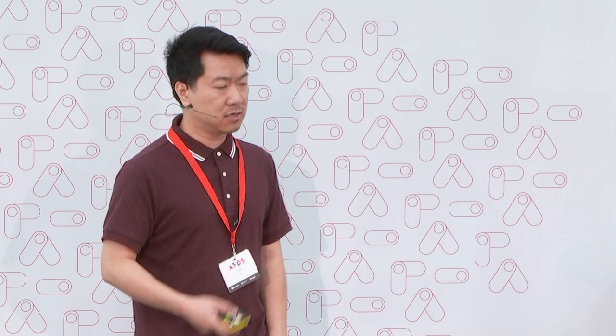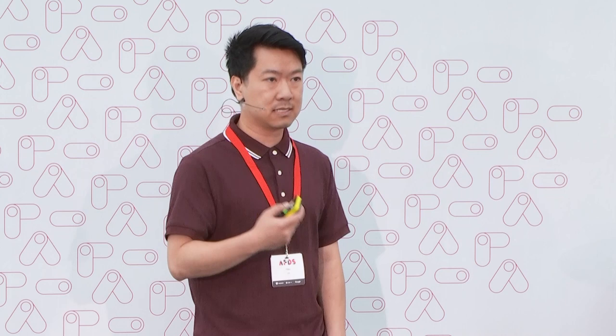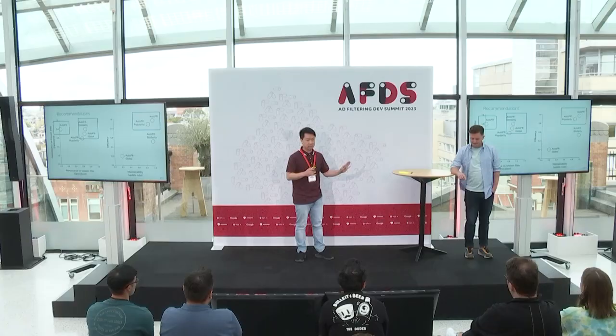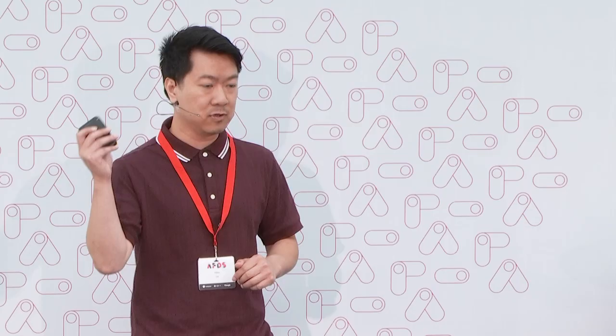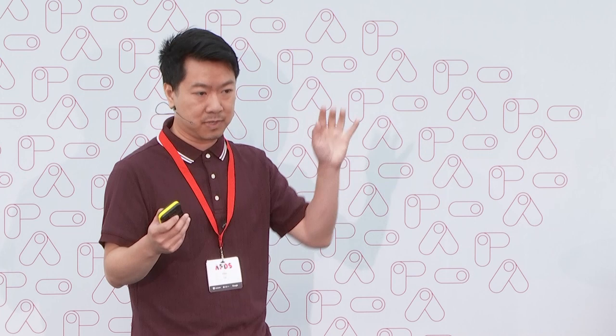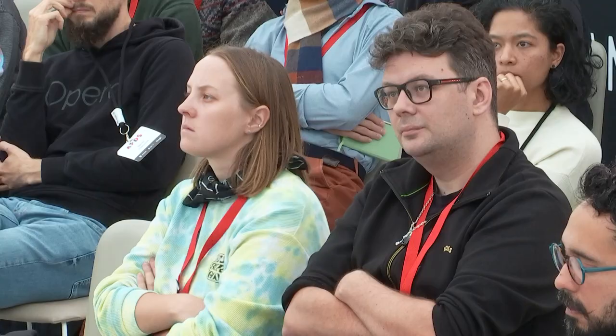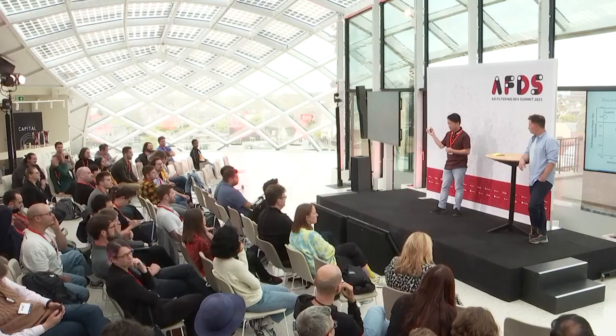We detect visual breakage by representing a site as counters of images, text, and ads. We get those numbers when there are no filter rules applied, then apply a filter rule and see how those numbers change. If you apply a filter rule and the number of ads goes down but the number of images and text stays the same, then there's no breakage. But if images and text go down from what we expect, that indicates breakage.